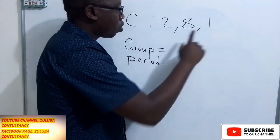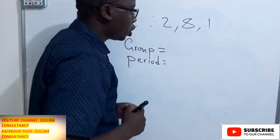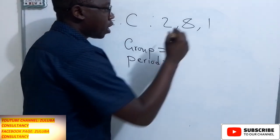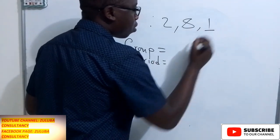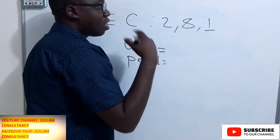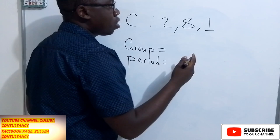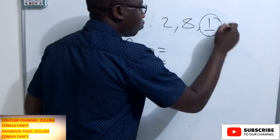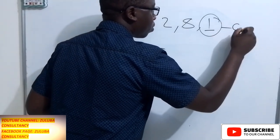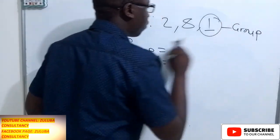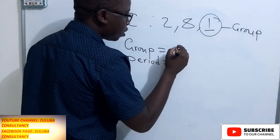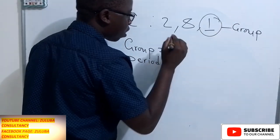When you have the electronic configuration like this one, the last number, or the valence electron, or the electrons in the outermost shell, gives you the group. So, for this electronic configuration, this element is in group 1.